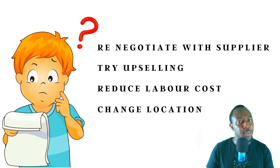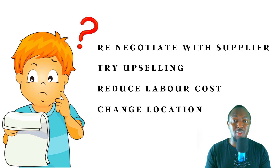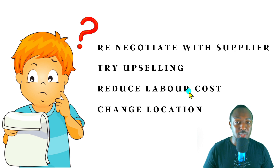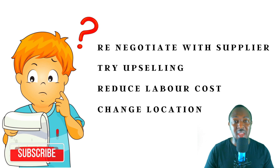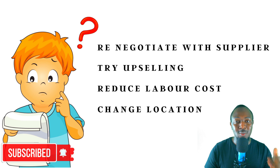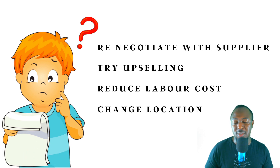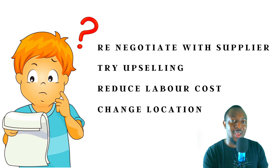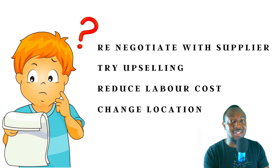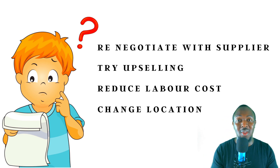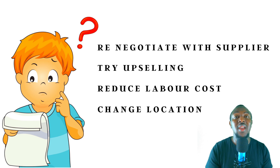If you go with all these pricing models and you're still struggling to make sales, go renegotiate with your suppliers so they can reduce raw material costs, try upselling, and try to reduce labor costs. If you're paying employees $10 per hour, try to increase productivity so they can make more burgers in an hour while maintaining quality, or just change location, or reduce the portion size — because McDonald's burgers used to be really big, and as time goes on, instead of increasing the price, they reduce the size of the burger. That's what most companies do. If you think you're going to lose, do something about it and make sure you're making profit. If you're in business and not making profit, you are running a charity company.